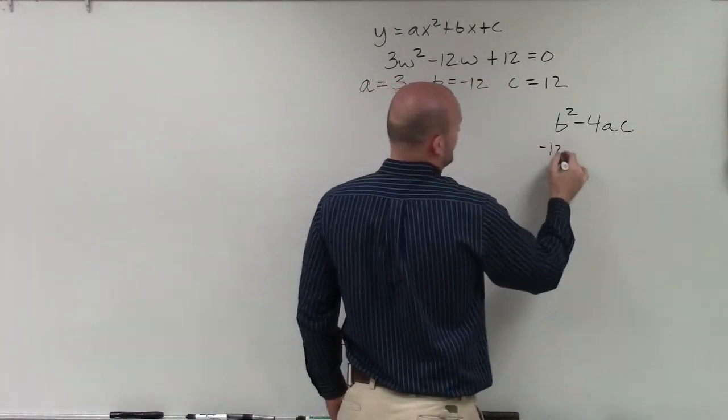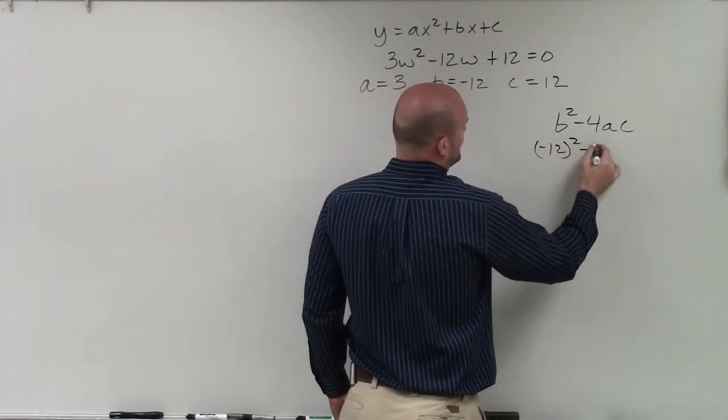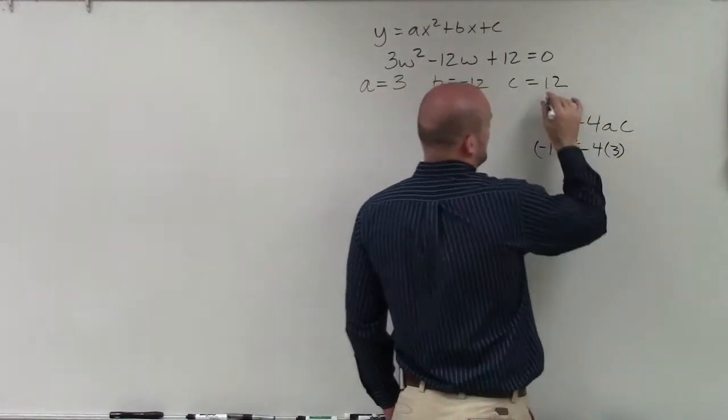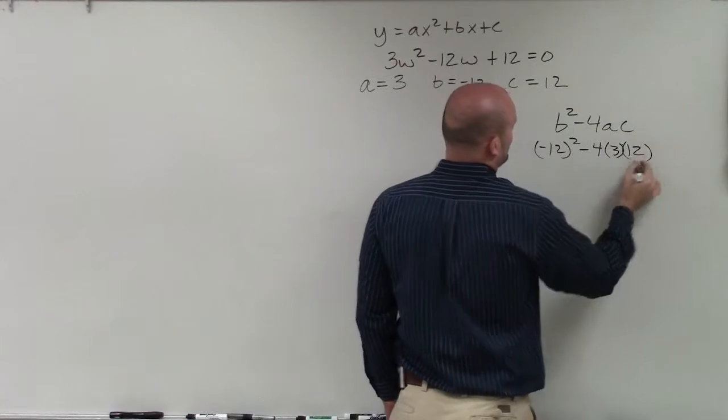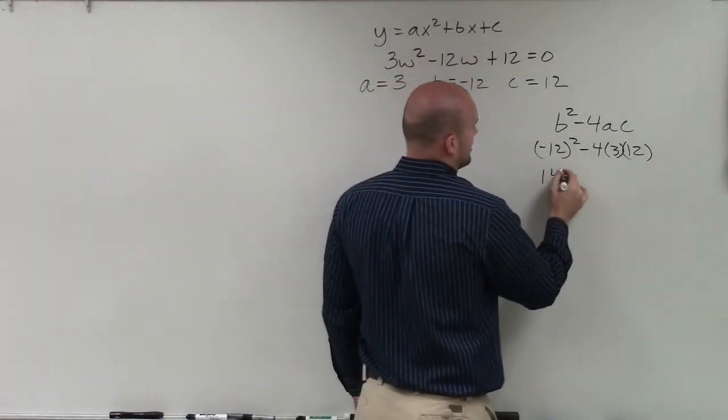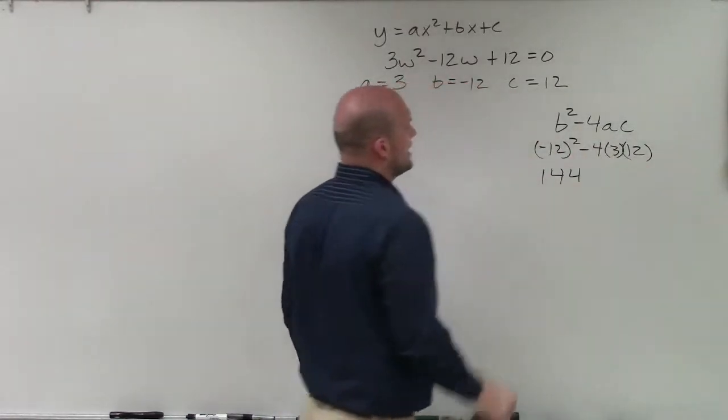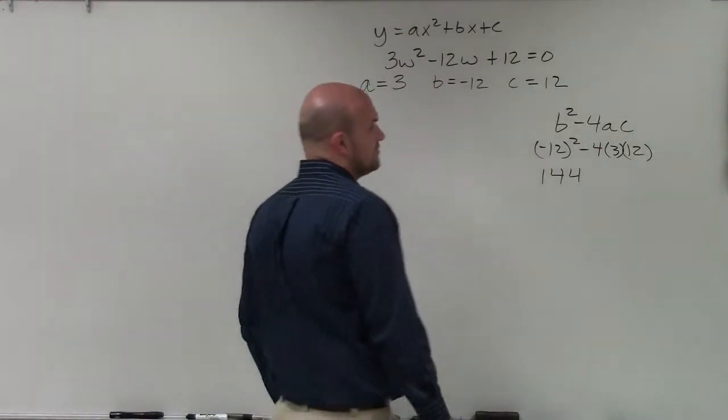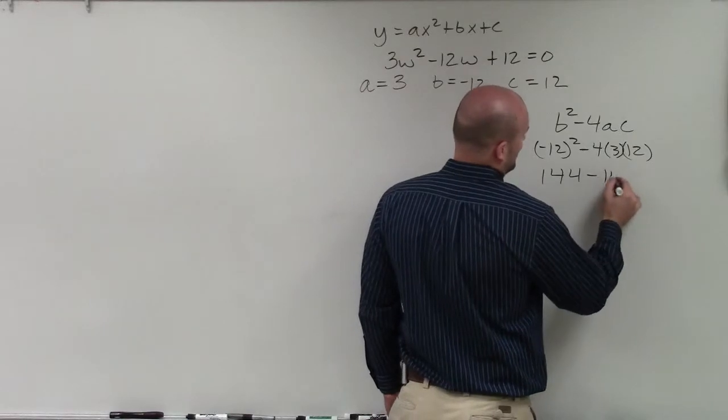So here, b² is (-12)² minus 4 times a, which is 3, times c, which is 12. Well, 12² is 144. -4 times 3 is -12. And -12 times 12 is -144.